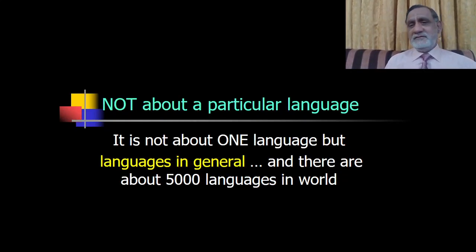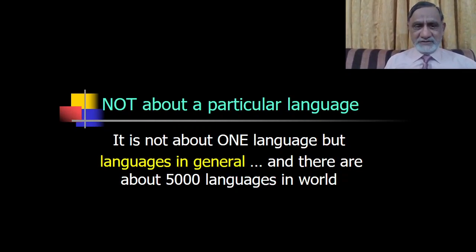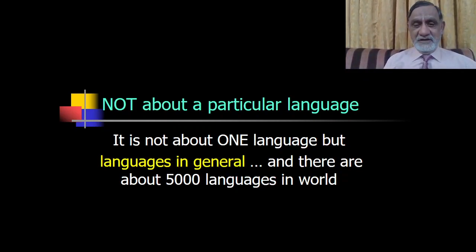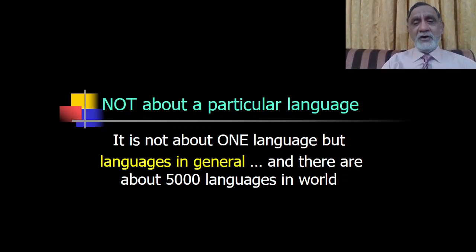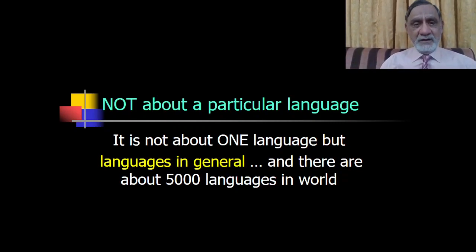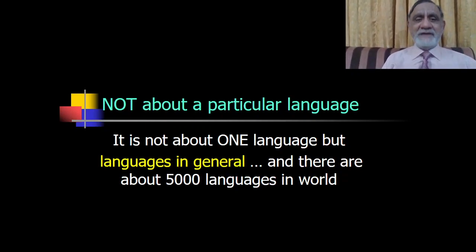One thing must be made clear right at the very outset: linguistics is not about any particular language — English, Urdu, French, German, or whatever. It is not about one language only, but about languages in general. There are about 5,000 languages in the world today. Many languages have been weeded out — they became dormant or are no longer in use — and several new languages are coming up. When we talk about linguistics, we may give instances from some languages, but we talk about languages in general.